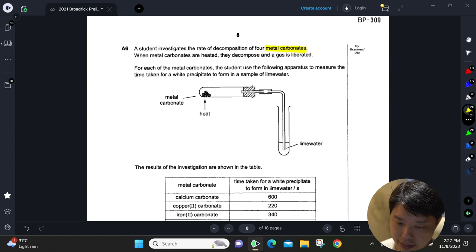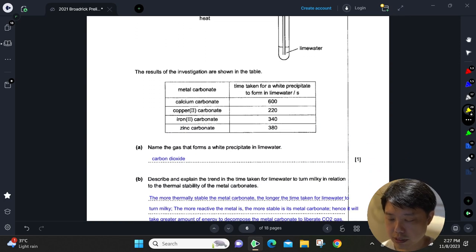When you heat carbonate, it breaks down to form carbon dioxide gas. They did this setup which forms a white precipitate in a sample of lime water, which is calcium hydroxide. When carbon dioxide gas comes into contact with calcium hydroxide, you get a white precipitate of calcium carbonate. You have the results of this investigation.